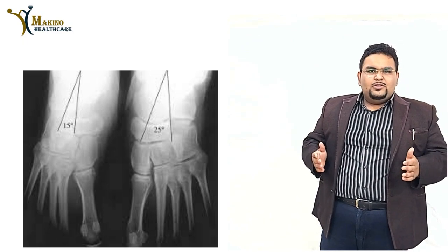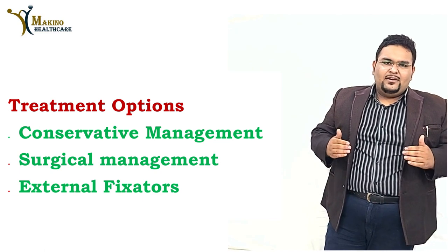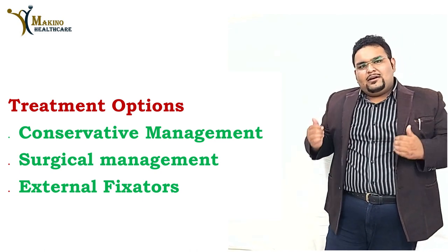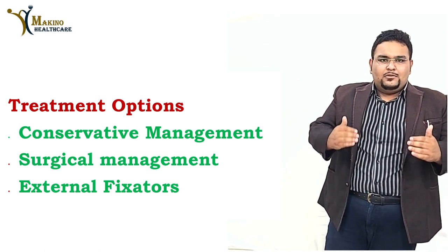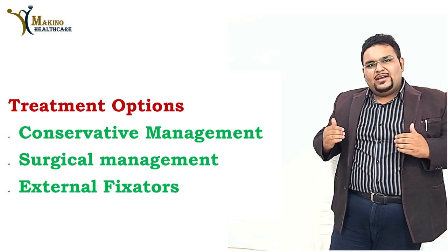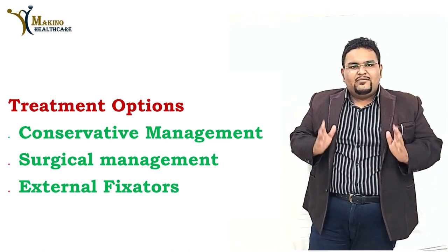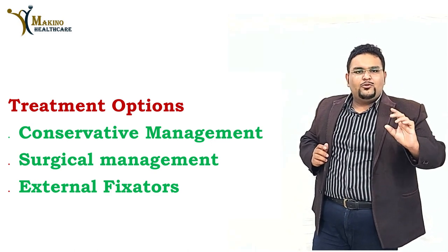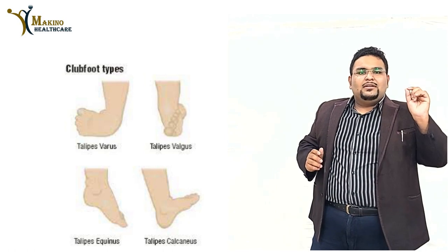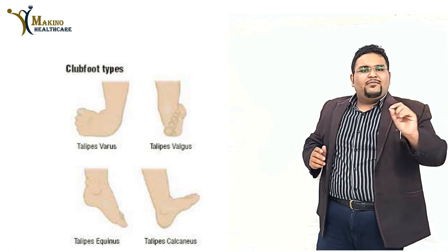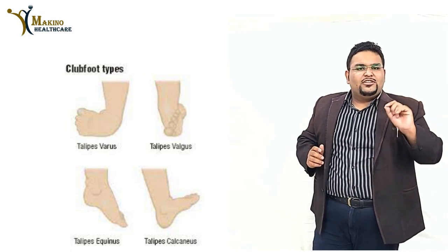Respected orthopedicians like Ponseti and Kite have suggested conservative management as more effective in CTEV. A mnemonic to remember conservative management is AVCRB: A — adduction of the forefoot correction; V — varus deformity correction; E — equinus deformity correction; RB — prevention of rocker bottom foot.